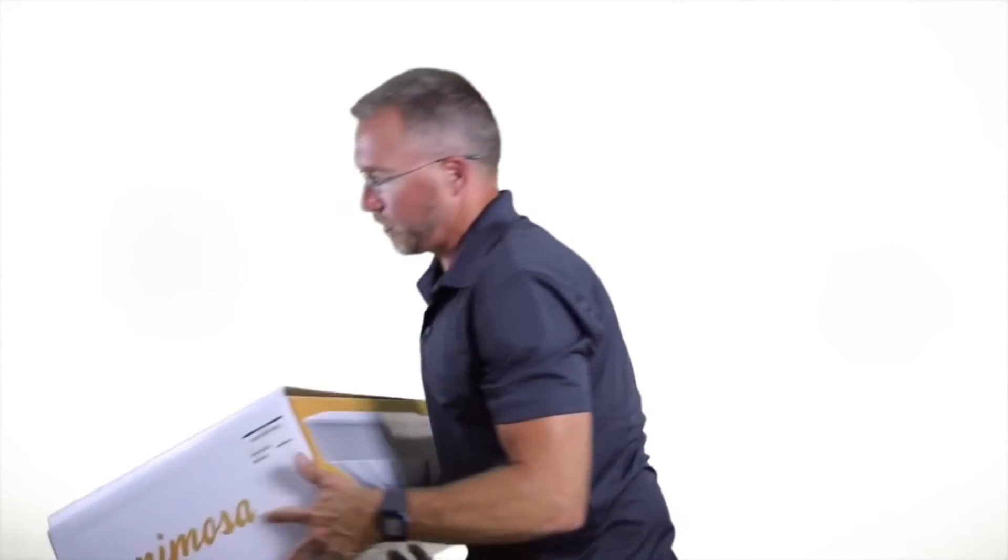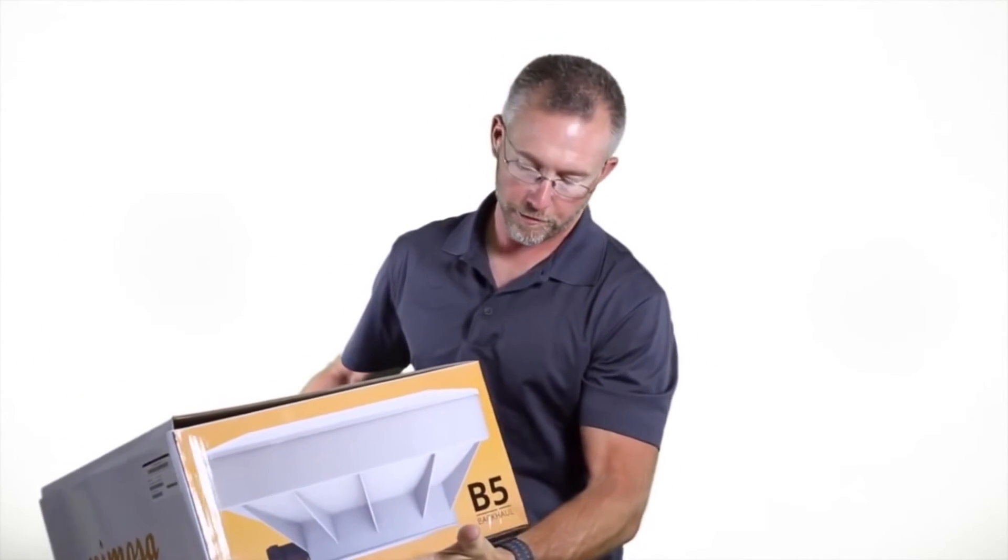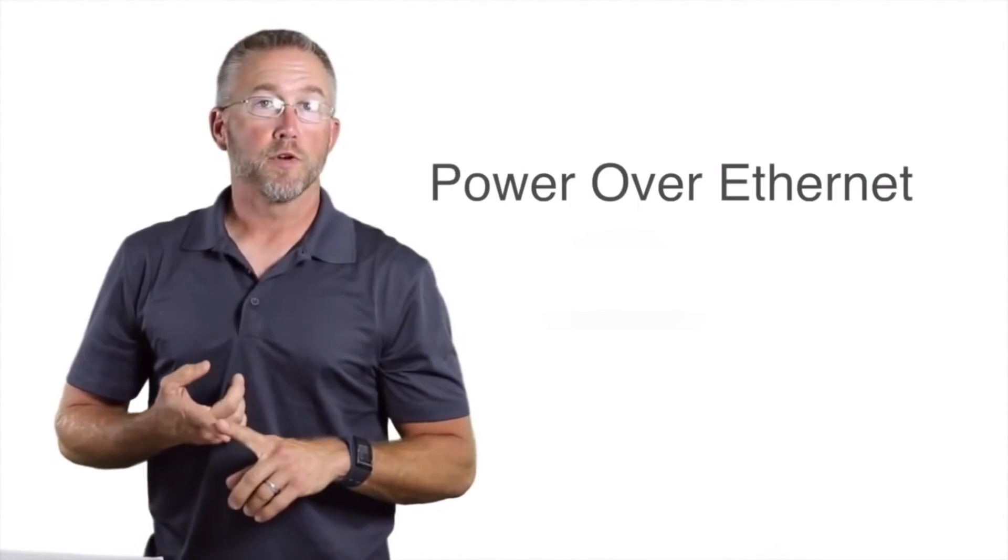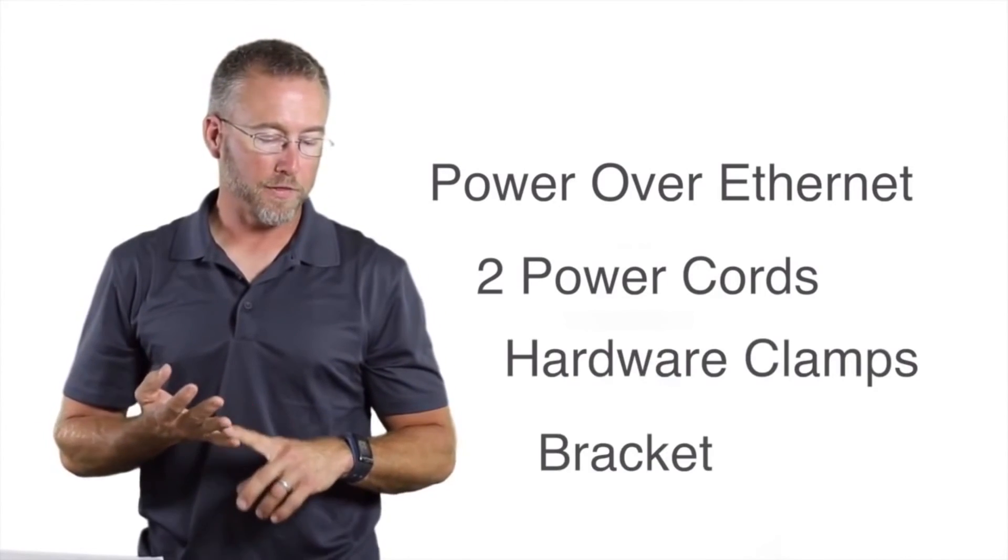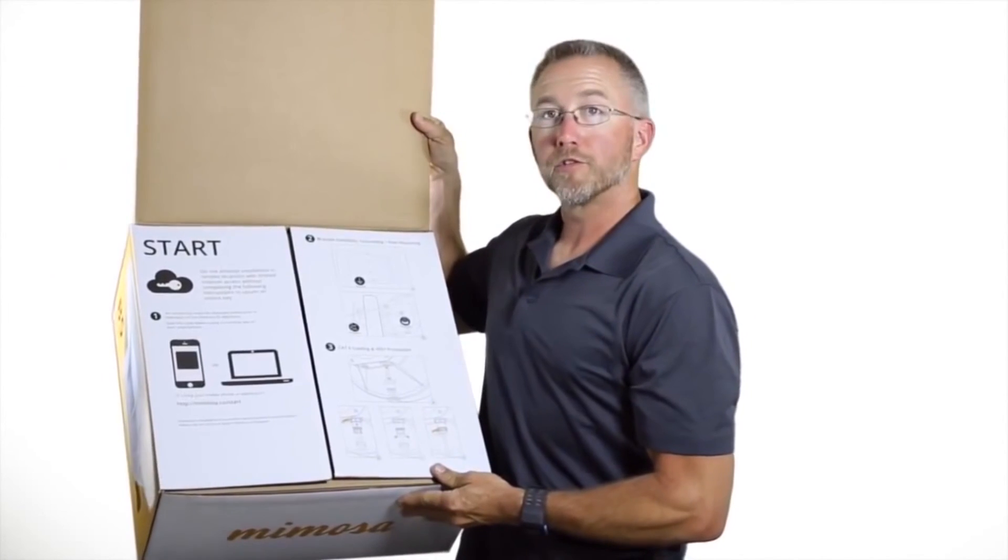So the box that the B5 comes in for shipping is actually not much bigger than the unit itself. Everything required for the installation is in the box. Your Power over Ethernet, the two power cords, the hardware and the bracket are all included. And there's basic instructions on the inside flap on how to get started.